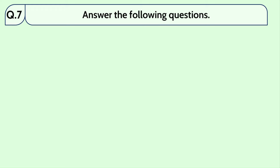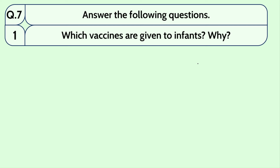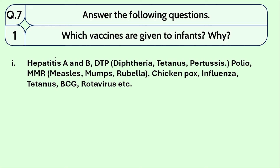Question number 7: what vaccines are given to infants and why? The vaccines given to infants include: Hepatitis A and B, Diphtheria, Tetanus, Pertussis, Polio, Measles, Mumps, Rubella, Chickenpox, Influenza, BCG, and Rotavirus. These vaccines are given to infants so that they don't get any disease — obviously they are new to this world and should not get any disease.